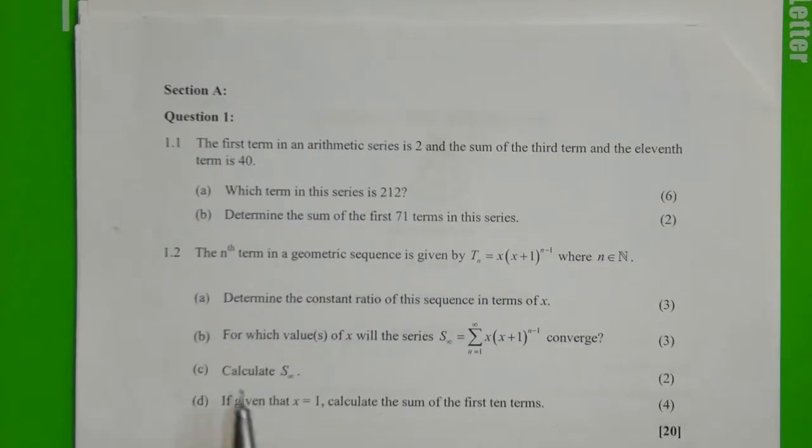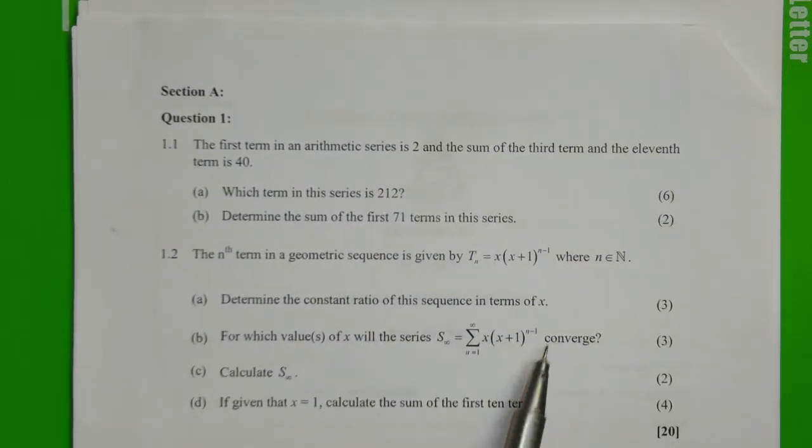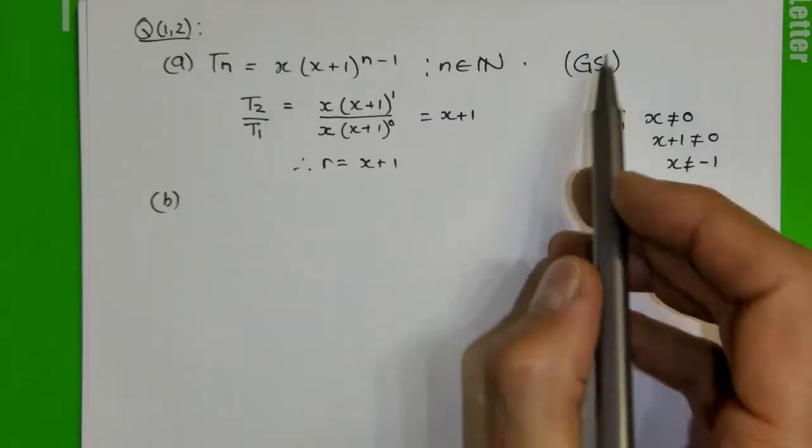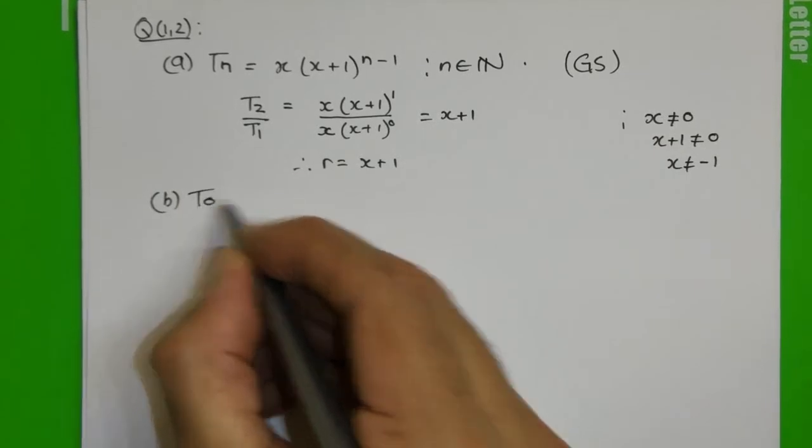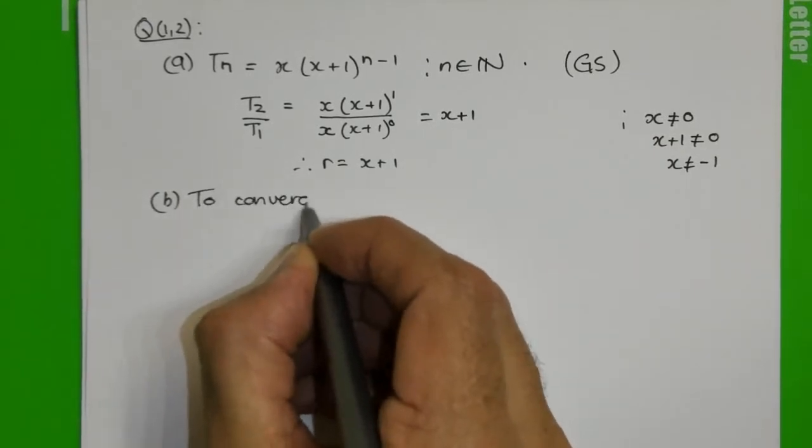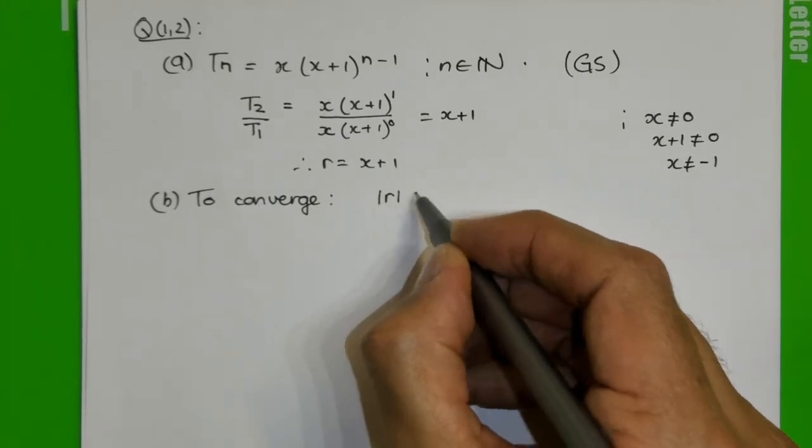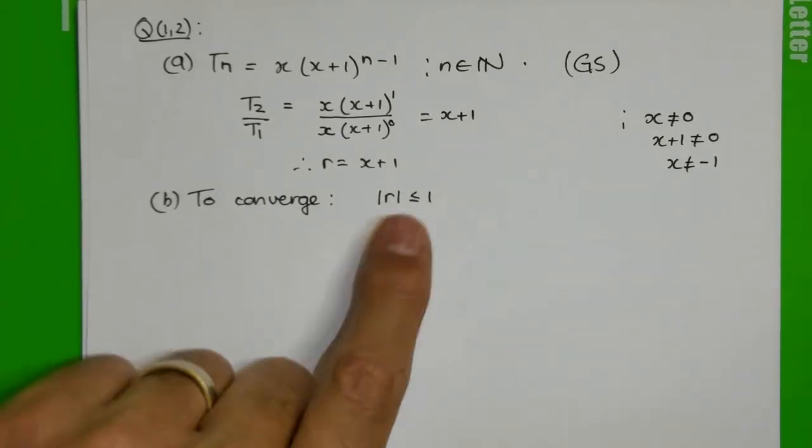Then they ask us, for which values of x will this series converge? It's a geometric sequence. So to converge, remember your condition. Whatever the constant ratio is, it must be smaller than 1.